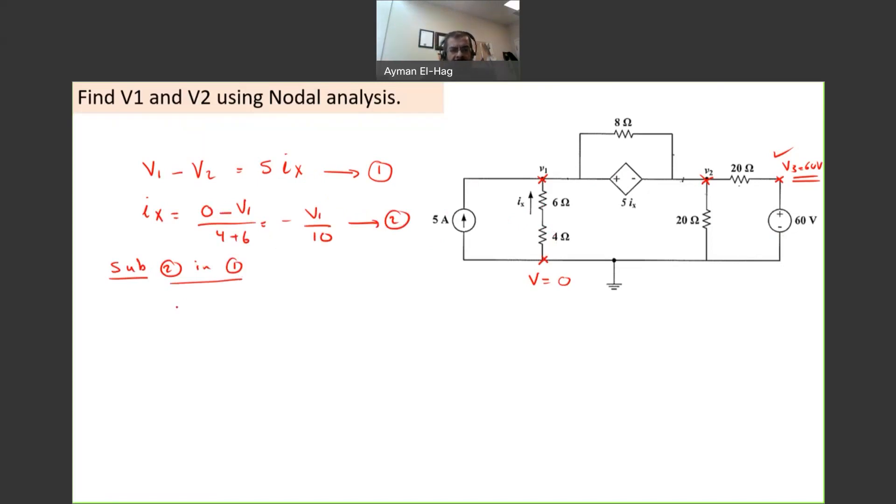Now I'd like to eliminate Ix from 1, so I will substitute equation 2 in equation 1. So we'll have V1 minus V2 equal to 5 times Ix, which is minus V1 divided by 10, which equals minus V1 divided by 2. I will multiply the whole equation by 2, so we'll have 2V1 minus 2V2 equal to minus V1. Or move this to the other side: 3V1 minus 2V2 equal to 0. This is equation number 3, one equation with two unknowns. I need one more equation.